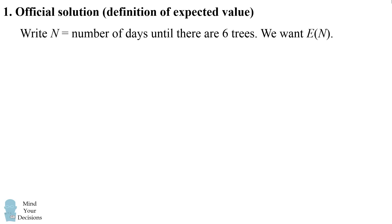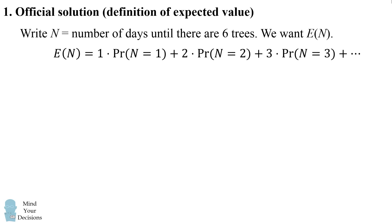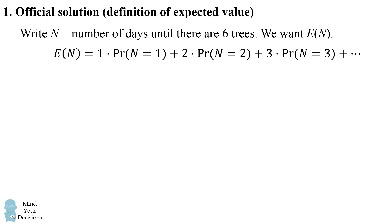The official solution starts as follows. We'll write N to equal the number of days until there are six trees, and we want to calculate E of N. By the definition of expected value, E of N equals 1 times P(N=1) plus 2 times P(N=2) plus 3 times P(N=3) and so on. The official solution then states that E of N equals P(N ≥ 1) plus P(N ≥ 2) plus P(N ≥ 3) and so on.